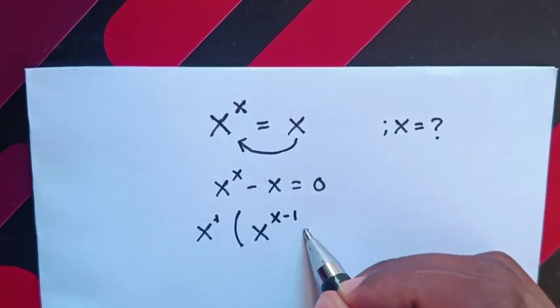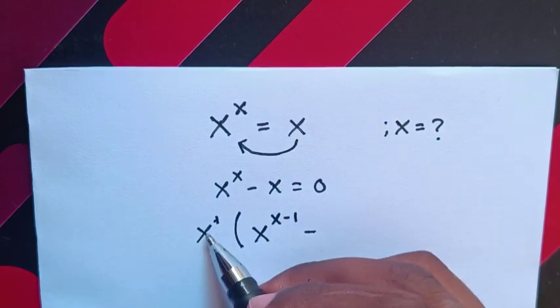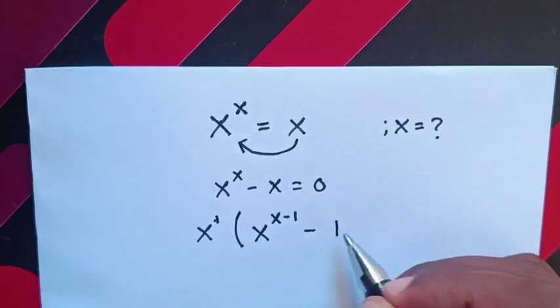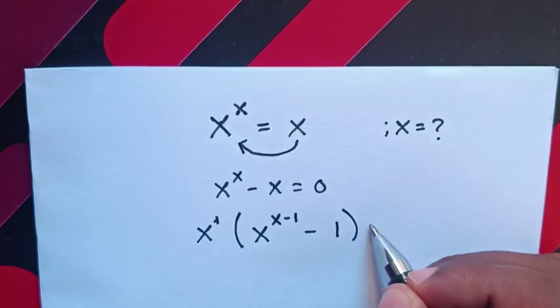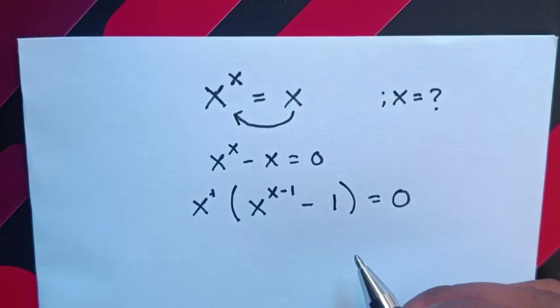Minus x same as x^1 divided by x^1 is 1, bracket is equal to 0. Then here we have two cases.